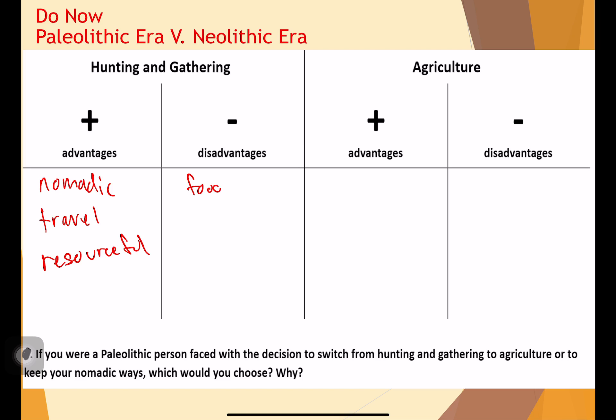Now for the disadvantages. Food is scarce — that's a pretty big one. When you literally have to depend on the area to have food, you can go starving. You cannot have water. You could die because of that. You have to worry about getting food every single day. It's also dangerous — it's a survival of the fittest type of situation. You have to out-compete other groups and other animals for food, and if you don't win, you die. On top of that, you could be hunted by other predators yourself.